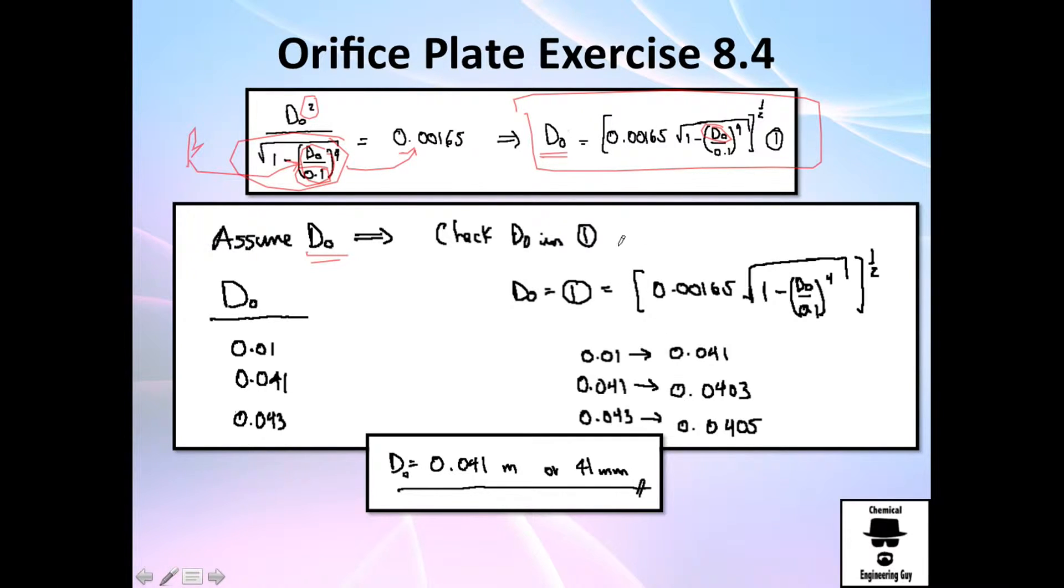So let's say we assume 0.01. We put 0.01 here, and 0.01 divided by 0.1 is one tenth to the fourth power, and then 1 minus that, then take out the square root and multiply it by this, and all once again square root. You should get 0.041. So compare 0.041, which is the new diameter, versus the old diameter 0.01. This means that we need to increase the diameter. So you can do that, or I also love doing choosing the old diameter as the new one.